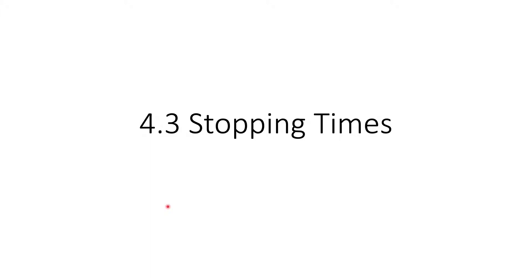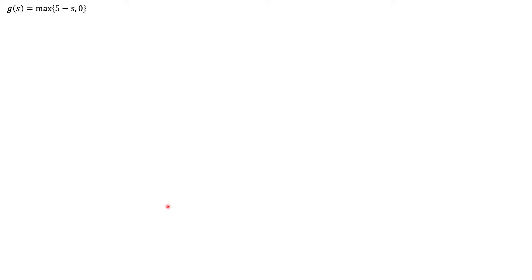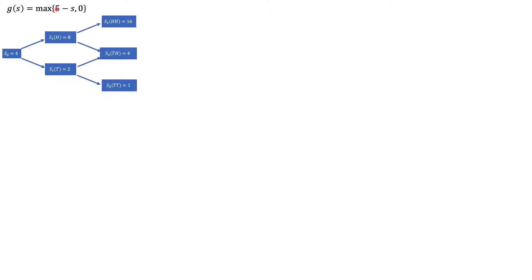Hello everyone, welcome to Stochastic Calculus for Finance I. This is Section 4.3 where we talk about stopping times. We'll start from the example we've seen in Section 4.2, where we had an American put option with a payoff — the strike price was five — and this is the tree we use in that example showing the different values the stock price can take.